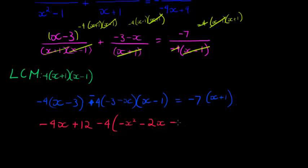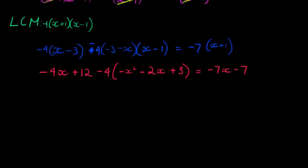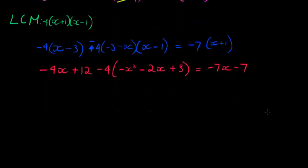That's equal to -7x. When I distribute the negative 7 to every term in there, you can see this is going to be a quadratic equation because of the x squared, which means I want it equal to zero, so I'm going to say plus 7x plus 7 on both sides.